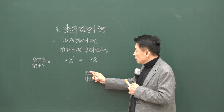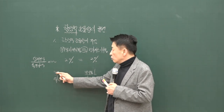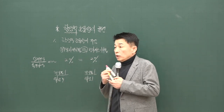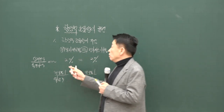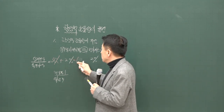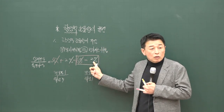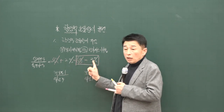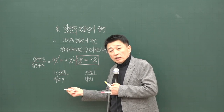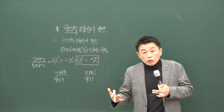정기예금은 위험이 작으니 수익률도 작게 주는 거예요. 반면 부동산에 투자하면 위험이 크기 때문에, 수익률을 작게 주면 아무도 투자하지 않겠죠. 그러면 부동산에 투자하기 위해서는 투자자가 감수하는 위험에 대한 대가가 플러스가 되어야 합니다. 그래서 두 수익률이 같다는 얘기는 그냥 같다는 게 아니라, 위험 대가가 포함되어 같아졌다는 의미예요. 그러면 부동산 수익률이 훨씬 크게 나타납니다.